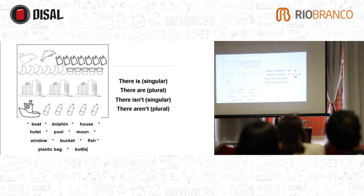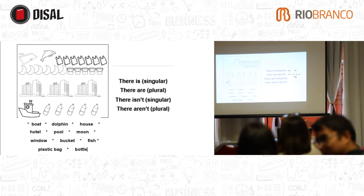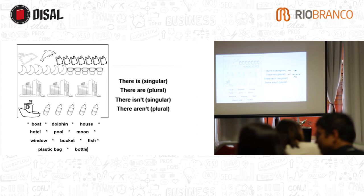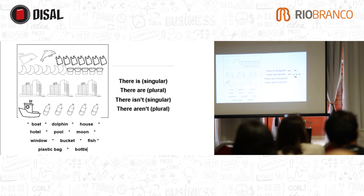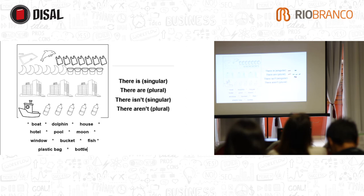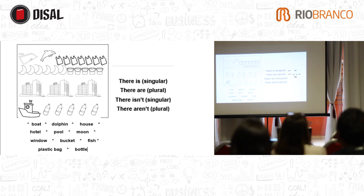One, two, three, four, five — five buckets? No, they're plastic bags. They look like buckets but they're plastic bags. Five, six, seven — so there are seven. You see? You see? You're welcome.